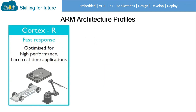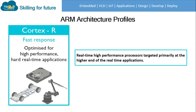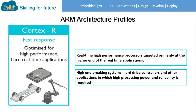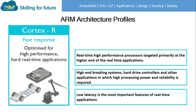Cortex-R: 'R' stands for Real-time. These are high-performance processors targeted primarily at the high end of real-time applications. High-end braking systems, hard drive controllers, and other applications in which high power and reliability are required are the best examples of Cortex-R.